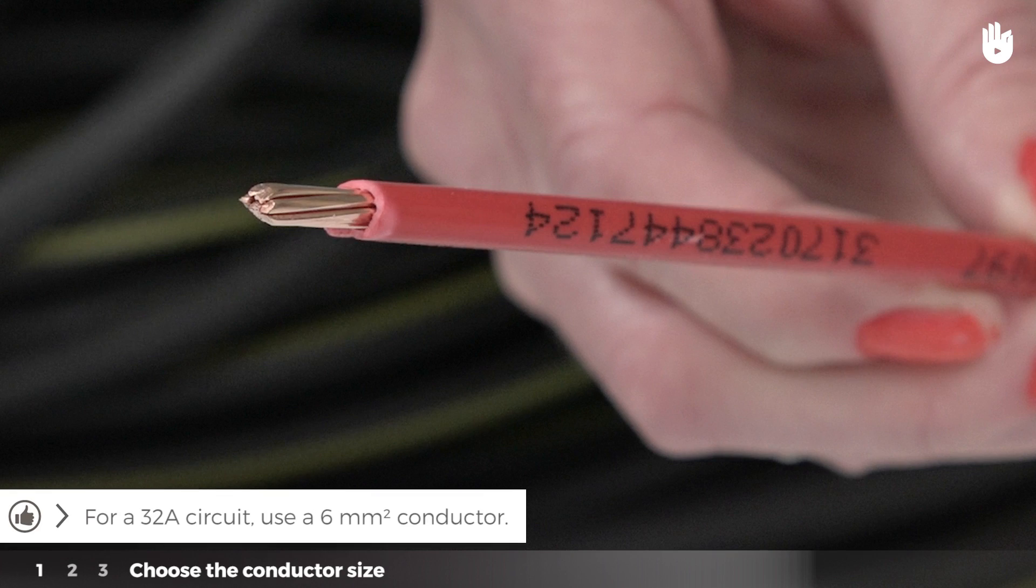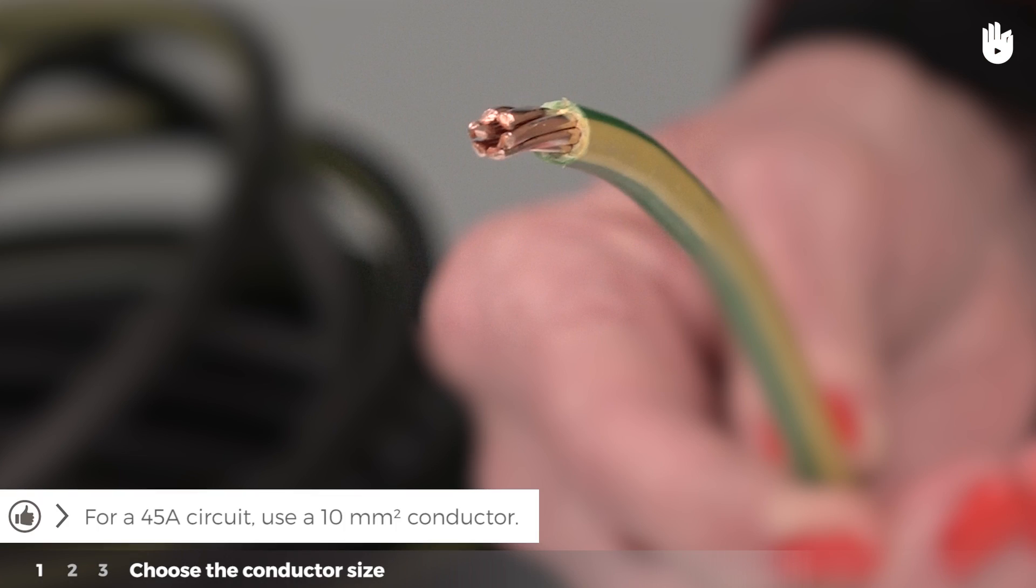For 32 amperes, a 6 mm conductor. Lastly, for 45 amperes, a conductor with a diameter of 10 mm squared.